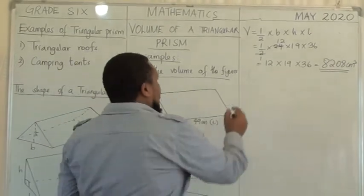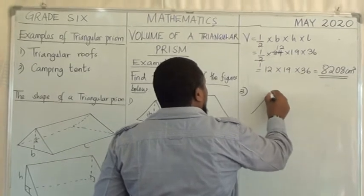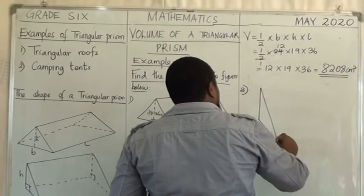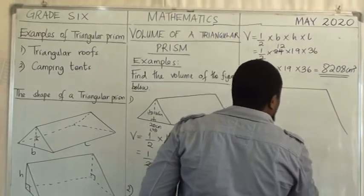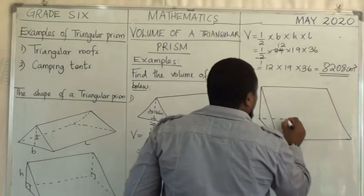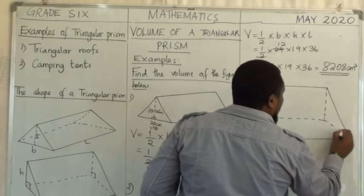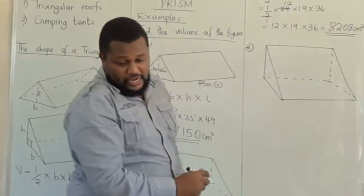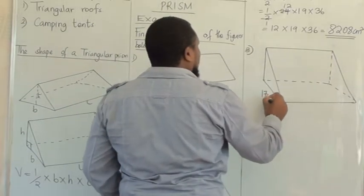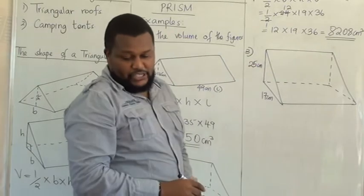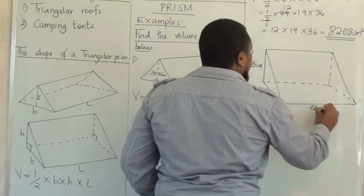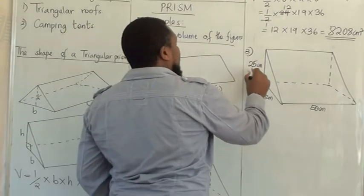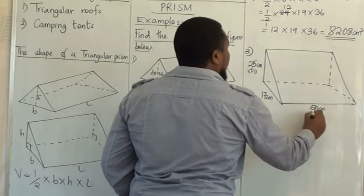Let's go to our last example, number 3. This is what we have. We shall have the base as 17 centimeters, the height as 25 centimeters, and the length as 50 centimeters. We have the height, the base, and the length.